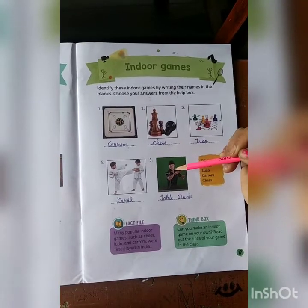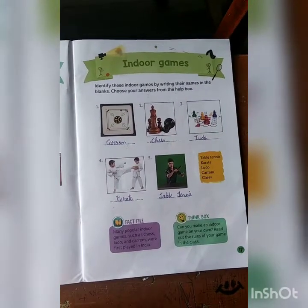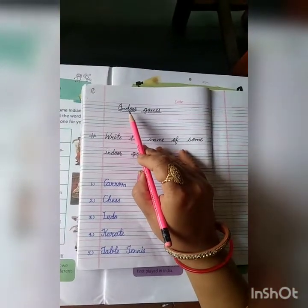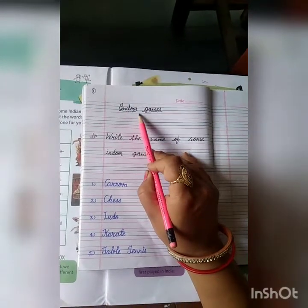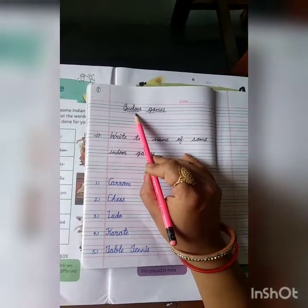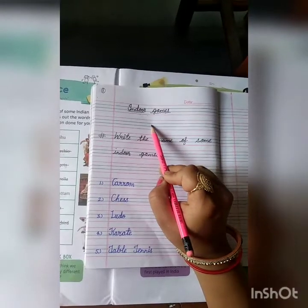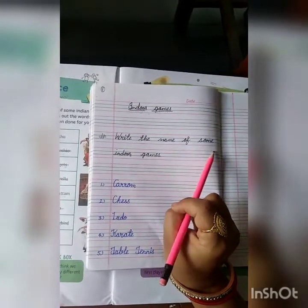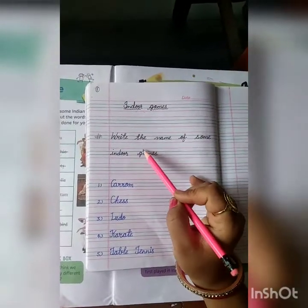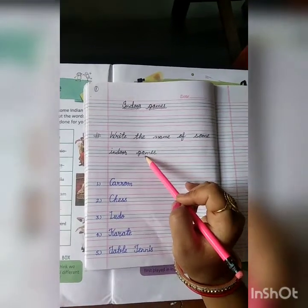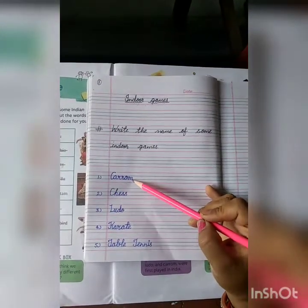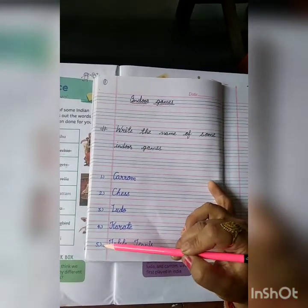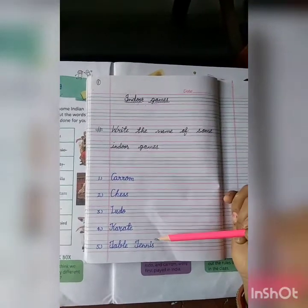Now I am describing how to do this work in your notebook. Open your notebook and write the topic name: indoor games. Leave one line, then write the heading: 'Write the name of some indoor games.' The answers are: first — carom, second — chess, third — ludo, fourth — karate, and fifth — table tennis.